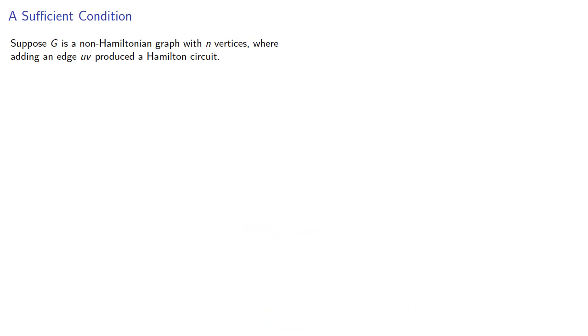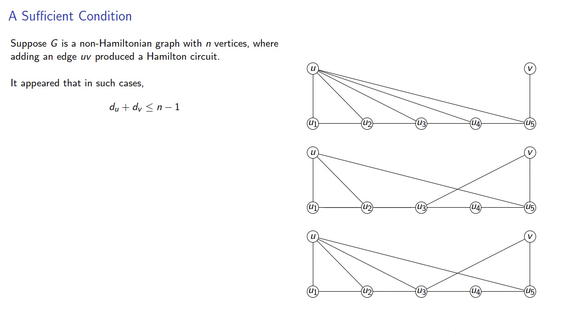Suppose G is a non-Hamiltonian graph with n vertices where adding an edge uv produced a Hamilton circuit. It appeared that in such cases the sum of the degrees of u and v was less than or equal to n minus 1.